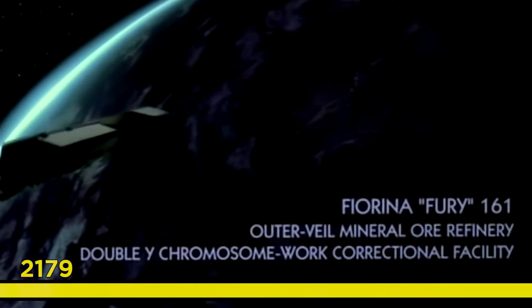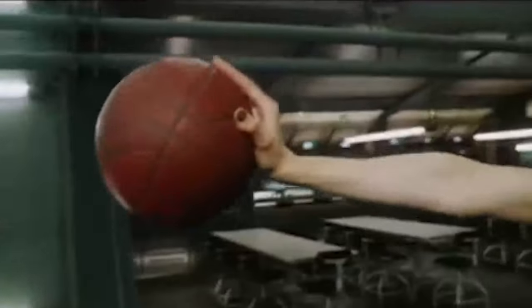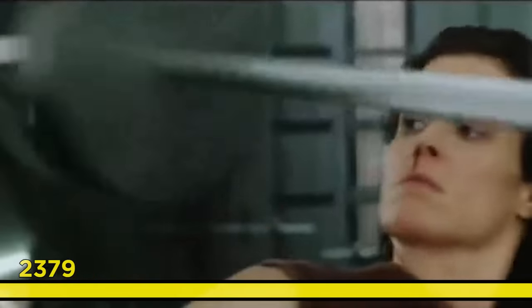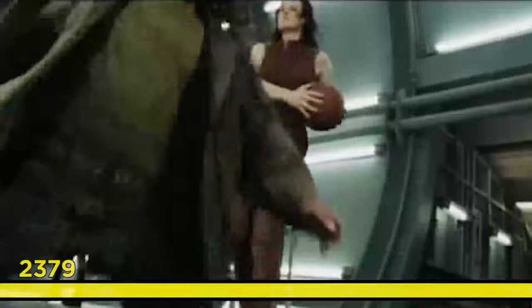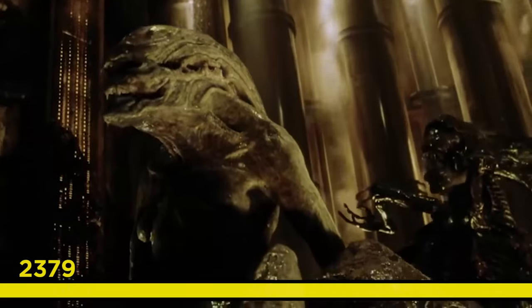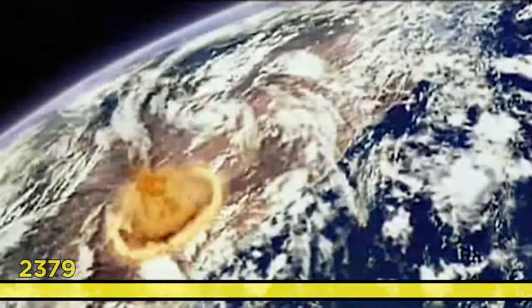Alien 3 takes place right after that, with Ripley crash landing on the prison colony Fiorina 161, or Fury 161. She learns that she has an Alien Queen embryo gestating inside her so Weyland can get its hands on the xenomorph. Ripley doesn't care — she kills herself and the baby by jumping into a fire. Then the fourth movie, Alien Resurrection, goes even crazier, jumping ahead 200 years to 2379, when the United Systems military uses Ripley's blood collected from Fury to clone her. Ripley's DNA has fused with the xenomorphs and now she has super strength and acidic blood. They extract the Alien Queen from Ripley and use it to breed xenomorphs and a xenomorph-human hybrid on the ship Auriga, which in the end crashes into the Earth, supposedly killing all the xenomorphs.